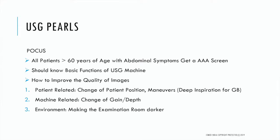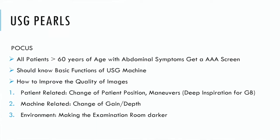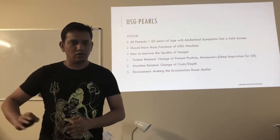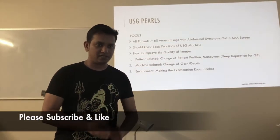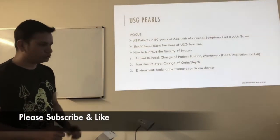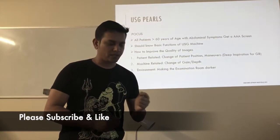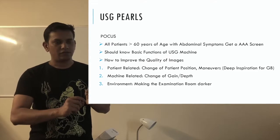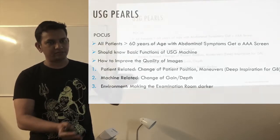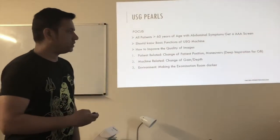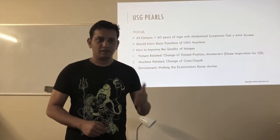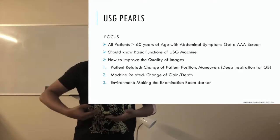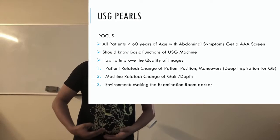Ultrasonography is very unlikely to be tested for the intermediate exam, but it will be there for the finals. All patients who come to the emergency department with any abdominal symptom, pain in the flank, urinary retention, pain in the abdomen, or hematuria — please do a triple A scan. Know the basic functions of the ultrasound machine: the gain button works like brightness and contrast on a television; the depth button lets you see a bigger area versus a focused area. To improve image quality, change the patient's position or ask the patient to perform maneuvers like deep inspiration, which brings the gallbladder or kidneys further down for better visualization.